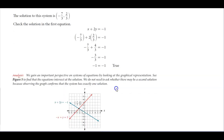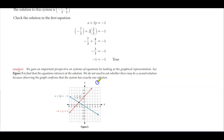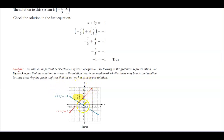Now we gain an important perspective on systems of equations by looking at the graphical representation. Looking at figure 5, we can see that the equations intersect at the solution. We do not need to ask whether there may be a second solution, because observing the graph confirms that the system has exactly one solution at negative 7 thirds, 2 thirds.